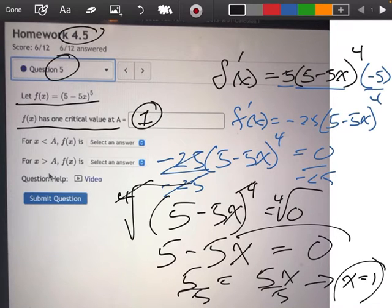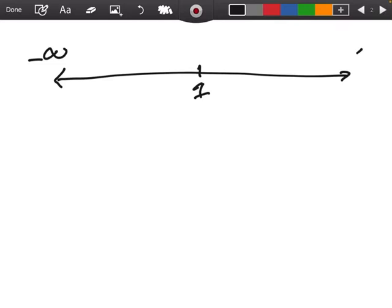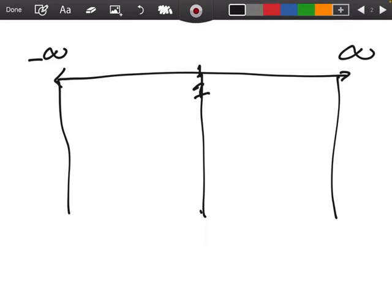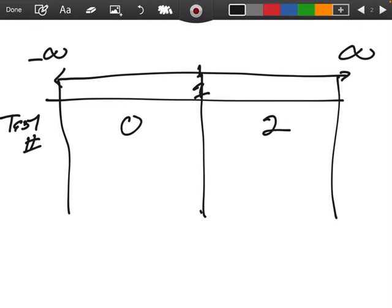Now we want to know, is the function increasing or decreasing? We're going to draw a number line. We have 1 value, and that's the number 1. The number over here is negative infinity, over here is positive infinity. What we're going to do now is pick a test number. Something smaller than 1, how about if we pick 0? Something bigger than 1, how about if we pick 2?